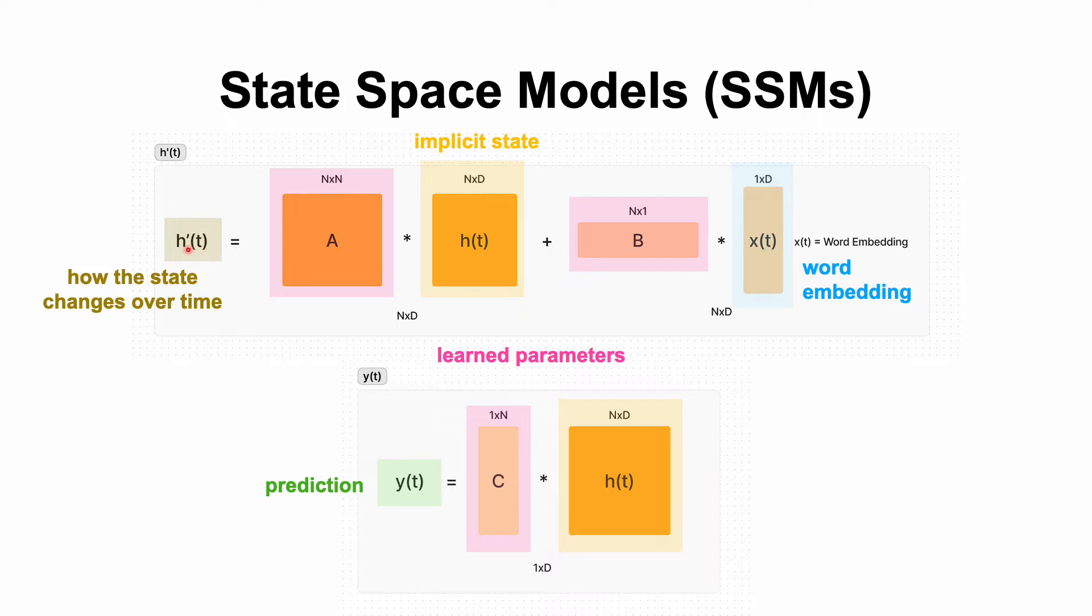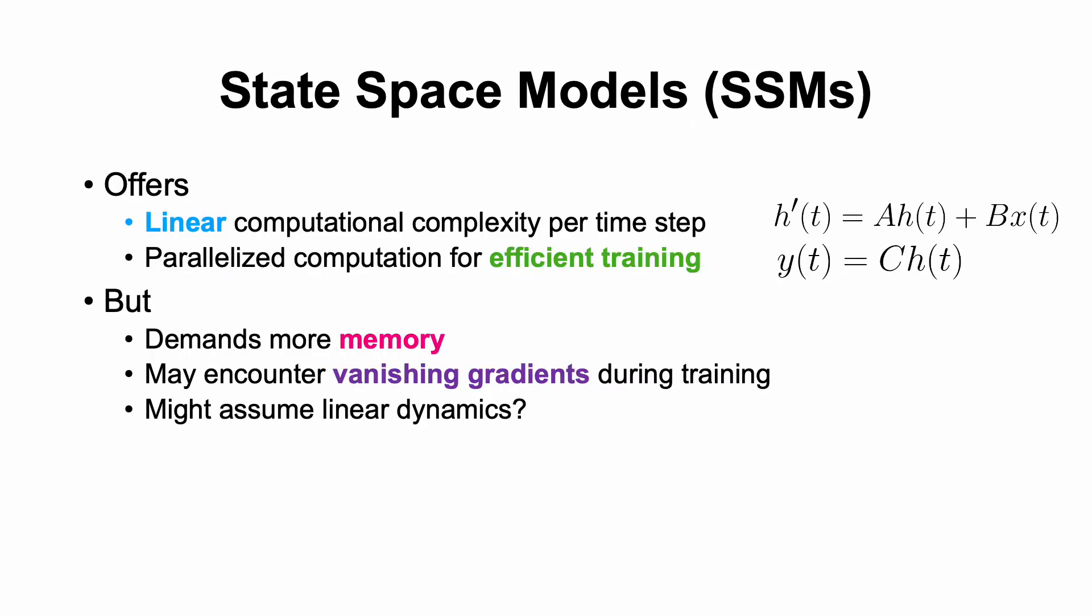So, again, h of t is how the state changes over time. a, b, and c are learned parameters. a represents the state matrix. It denotes how the hidden space should be updated over time. The hidden space is h of t. b is a vector. It denotes how the input needs to be transformed into the hidden space. And then c is also a vector, converting the hidden state back to the final output. All in all, this architecture offers linear computational complexity per time step. So it's really efficient, and you can parallelize it for efficient training. But it might demand more memory, and you might encounter vanishing gradients as well during training. Also, you might assume linear dynamics because you're only doing things sequentially.